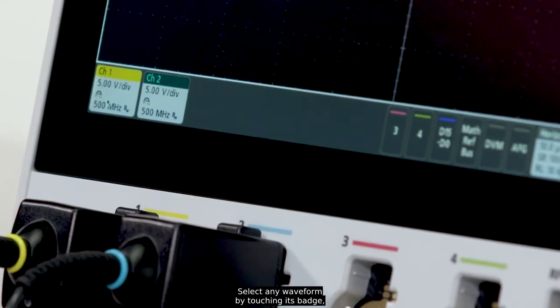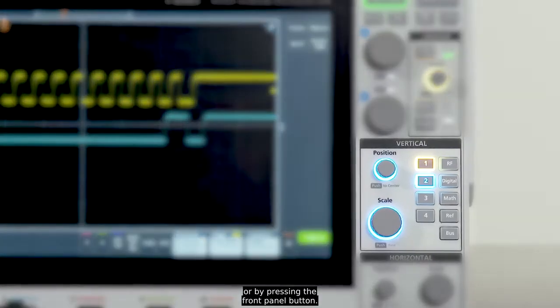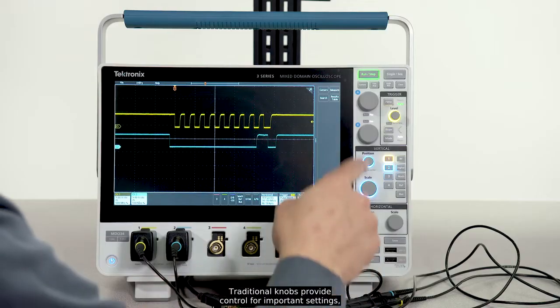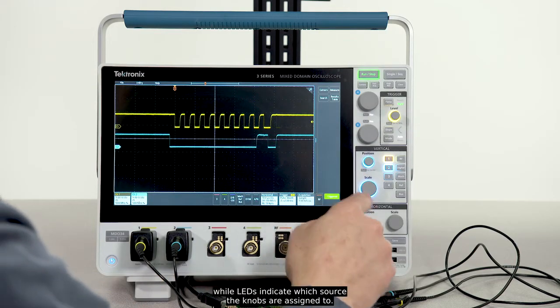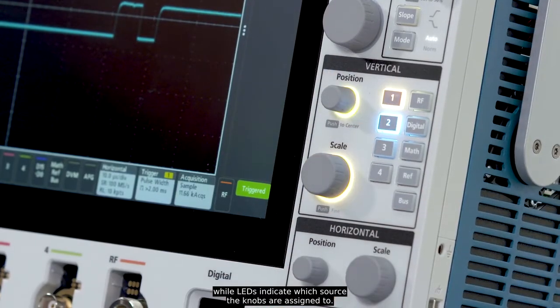Select any waveform by touching its badge or by pressing the front panel button. Traditional knobs provide control for important settings while LEDs indicate which source the knobs are assigned to.